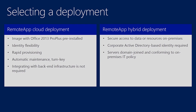When selecting deployment options, our cloud deployment option already has an image with Office 2013 ProPlus pre-installed — so if you're a customer using Office 2013 today, this should be a no-brainer. It offers identity flexibility with either a Microsoft account or corporate account, rapid provisioning, automatic maintenance, and a turnkey solution for session host images. The hybrid deployment option allows secure access to on-premises data or resources, provides corporate Active Directory-based identity, and maintains adherence to corporate IT policy and group policies.